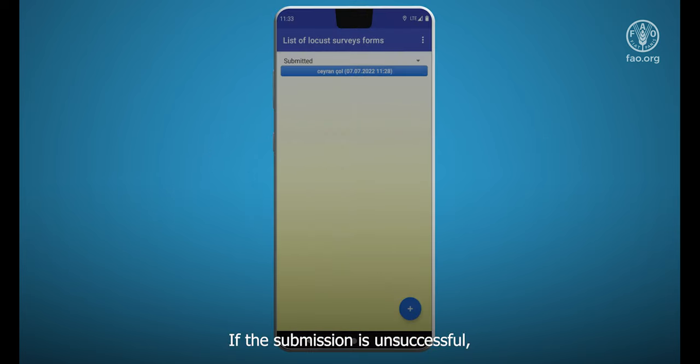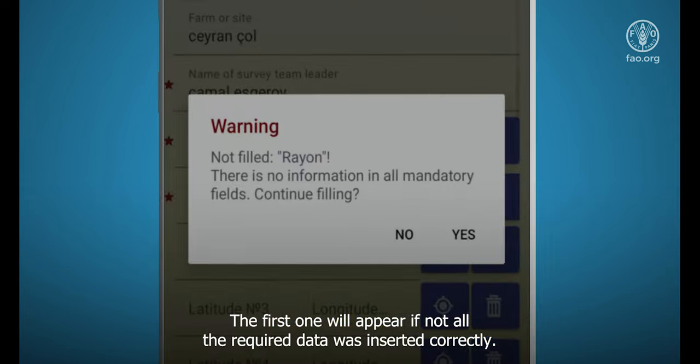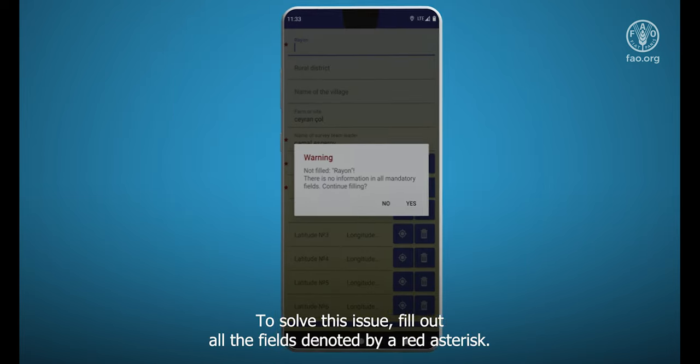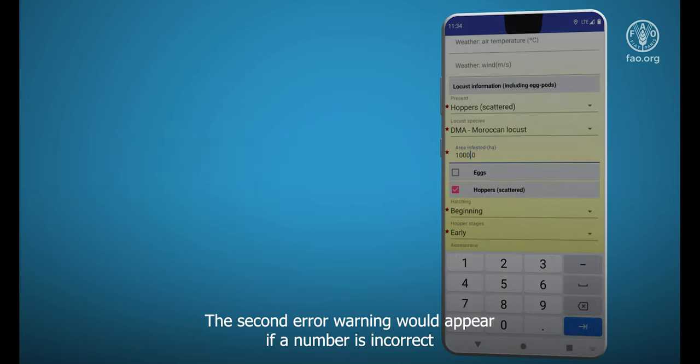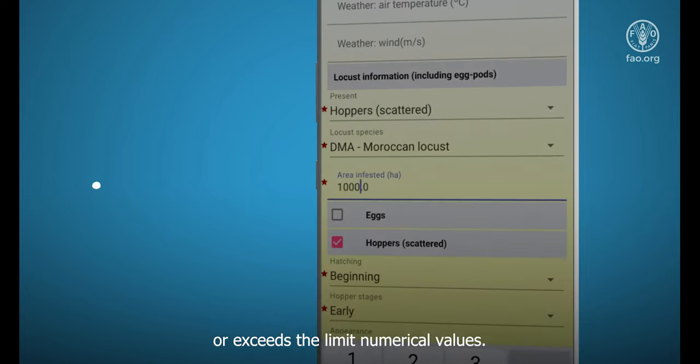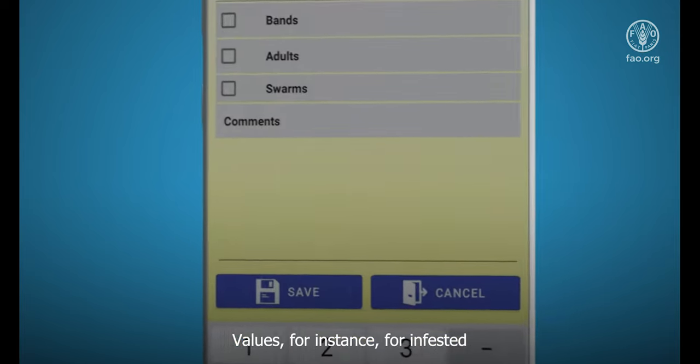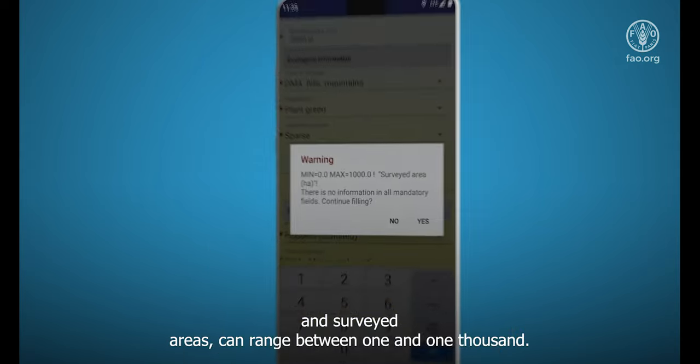If the submission is unsuccessful, there are two main warnings a user can receive. The first one will appear if not all the required data was inserted correctly. To solve this issue, fill out all the fields denoted by a red asterisk. The second error warning will appear if a number is incorrect or exceeds the limit numerical values. Values, for instance for infested and surveyed areas, can range between 1 and 1000.